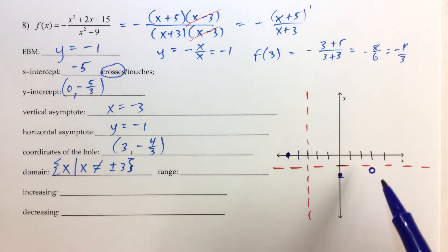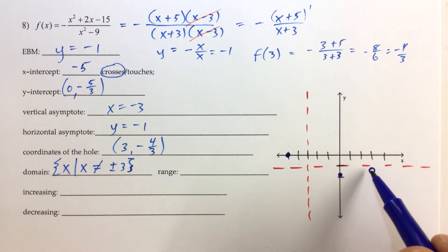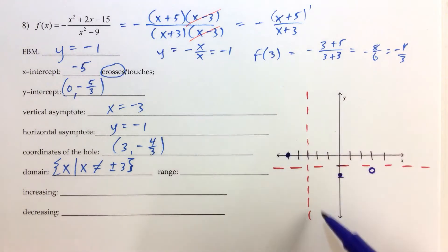So continuing with drawing the graph, now that we have our lane lines, we have our points, and our hole that the graph is going to either go through or kind of jump over, if you want to think of it like that.